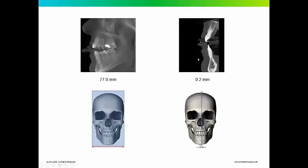With cone beam CT, you have the ability to vary the focal trough. This is the same scan, same patient — here's a 77mm focal trough versus a 0.2mm focal trough. The blue represents the thickness of the focal trough compared to a much thinner focal trough that isolates a single tooth and its bony support. In this case, it's a sagittal view.